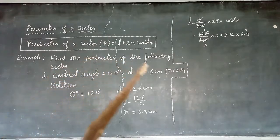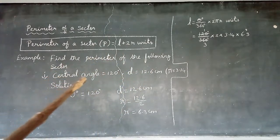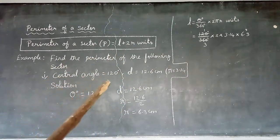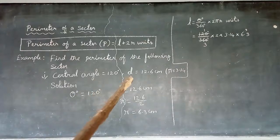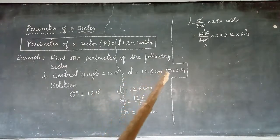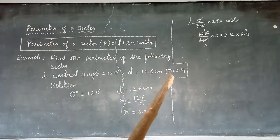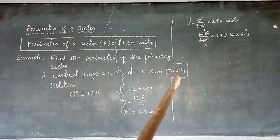Now we will see some examples to find the perimeter of a sector. Example: central angle θ = 120 degrees, diameter d = 12.6 centimeters, and take π = 3.14.